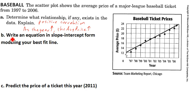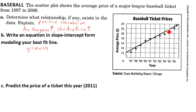Now we want to write an equation in slope-intercept form: y equals mx plus b. We want the slope and the y-intercept. For the slope, we're going to need to get a couple of points from our line. When we choose points, we want to make sure we choose points that are actually on the line, and we want points that are spread apart.